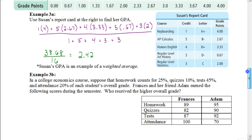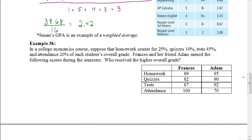Let's look at the next example. This is going to be a little bit different because here they've already figured out percents for the grade. So in a college economics course, suppose that homework counts for twenty five percent of the grade, quizzes count towards ten percent of the grade, tests forty five percent and attendance twenty percent of each student's overall grade.